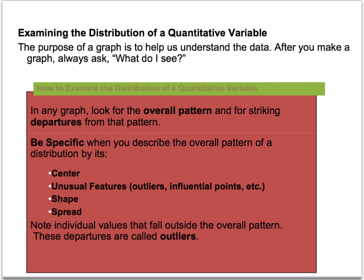So if you look here, you will notice here that those four words represent CUSS, and the be specific is the BS. So this is what I'm always going to ask you to do, is CUSS and BS any time you see a graph. And it will require you to write a paragraph that includes all of these features. Center, unusual features, shape and spread, and make sure you're specific in your answers. Give me some specific numbers to back up your descriptions.